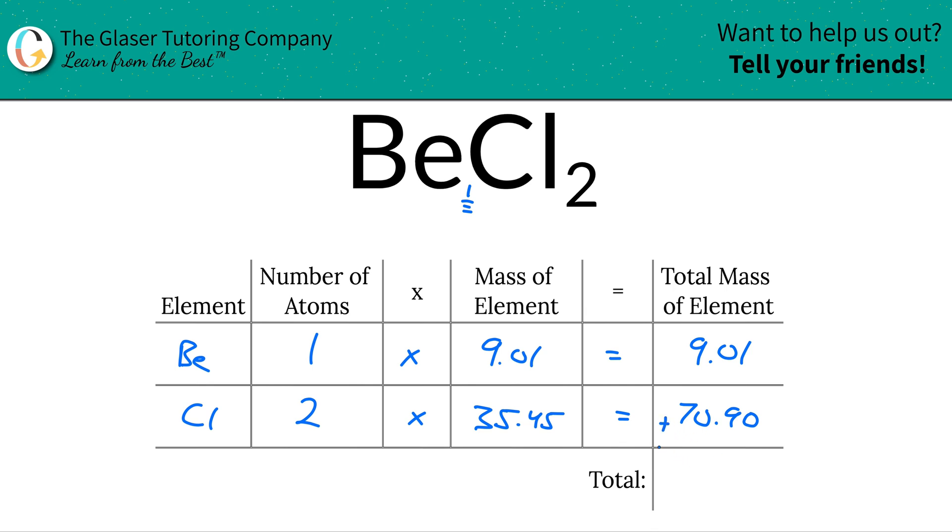To find the total mass of the entire compound, just simply add that column together. And when you do that, it works out to be 79.91. And since we're solving for molecular mass, the units here are in AMU or atomic mass units.